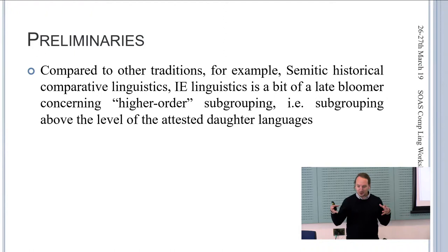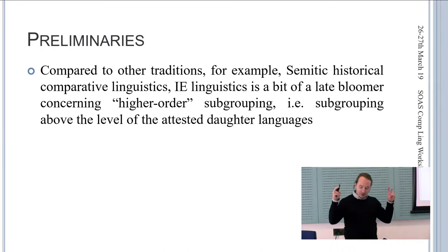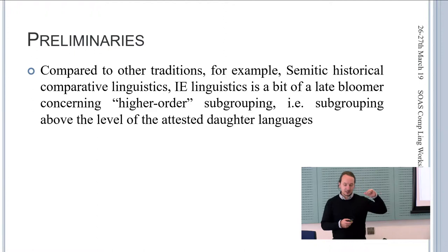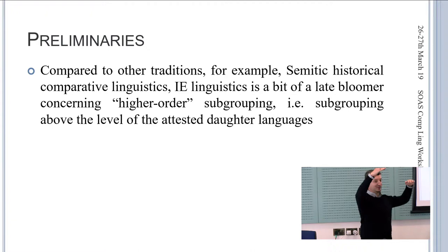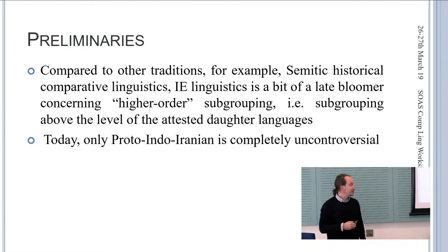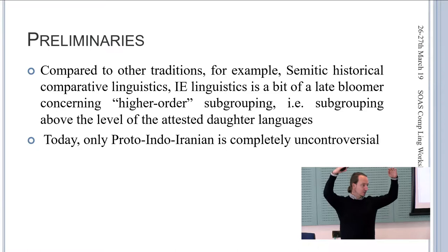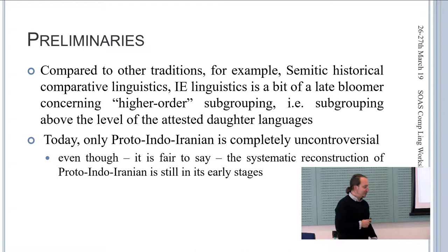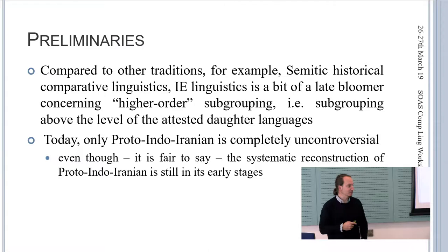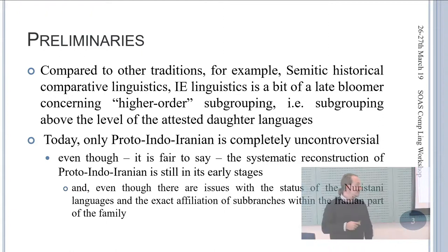Compared to other traditions like Semitic historical comparative linguistics, Indo-European linguistics is a bit of a late bloomer concerning higher-order subgrouping — that is, subgrouping above the level of the attested daughter languages and below the Proto-Indo-European level. Today, only Proto-Indo-Iranian as a higher node is completely uncontroversial, though the systematic reconstruction of Proto-Indo-Iranian is still in its early stages.